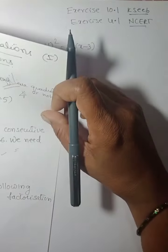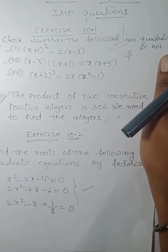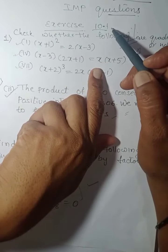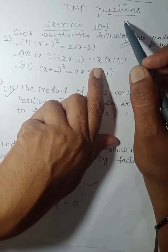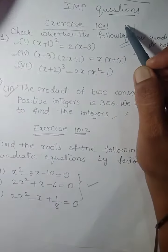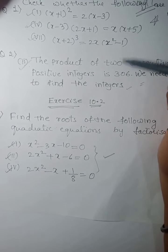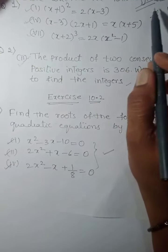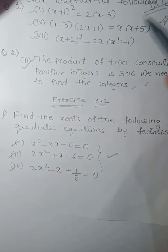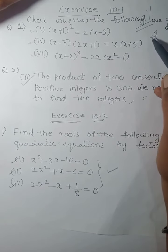Now I am discussing some important questions of quadratic equations — not MCQs, but one more type of questions, exercise-wise. This is Exercise 10.1 for Karnataka state board, Chapter 10, and Chapter 4.1 for NCERT. I have selected two main questions you may get in the exam. The first question asks: check whether the following equations are quadratic or not — it may be asked for two marks. I have selected three questions from it: the first, fourth, and seventh.